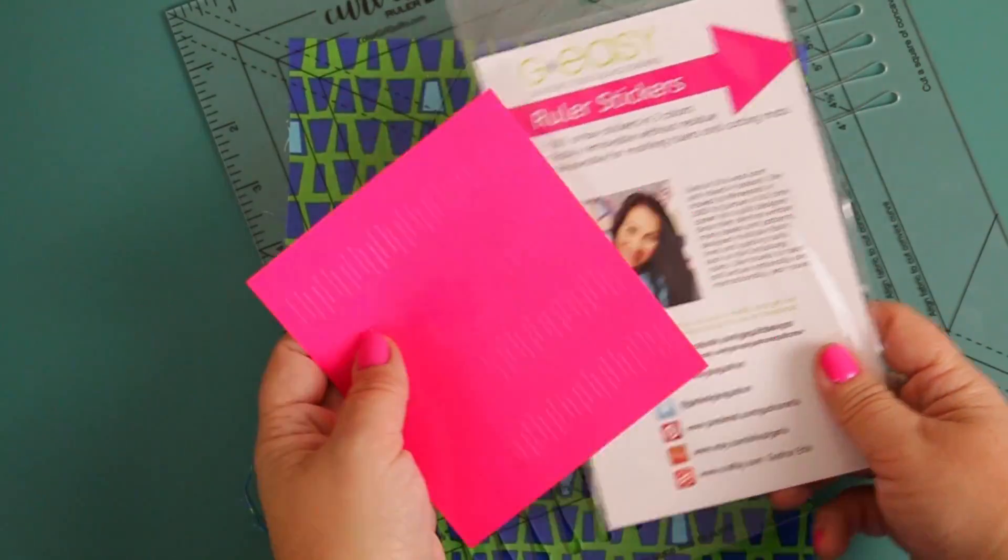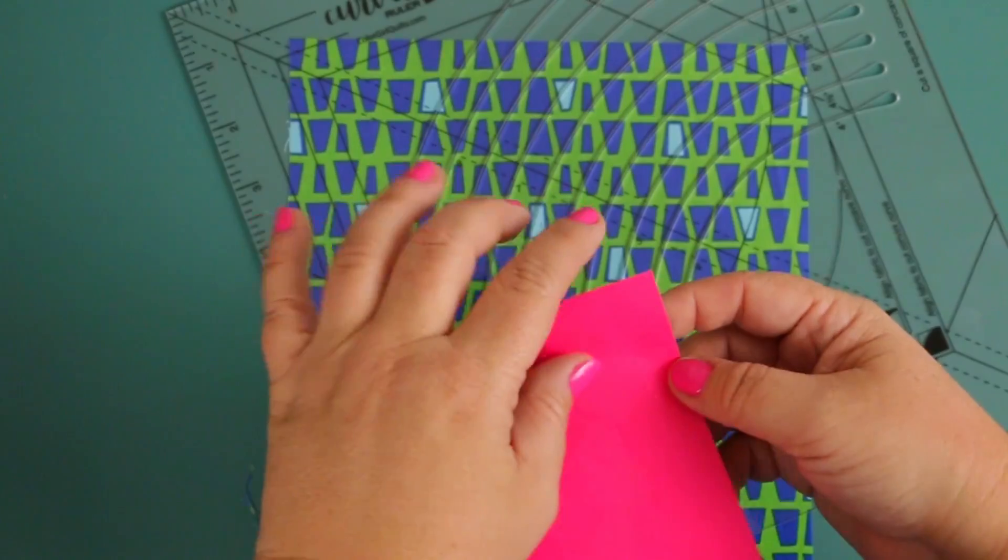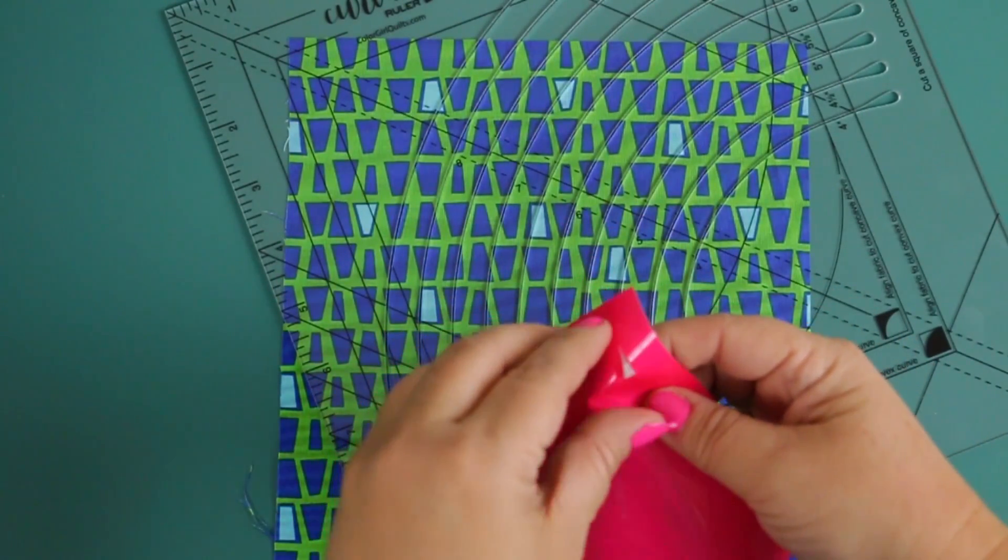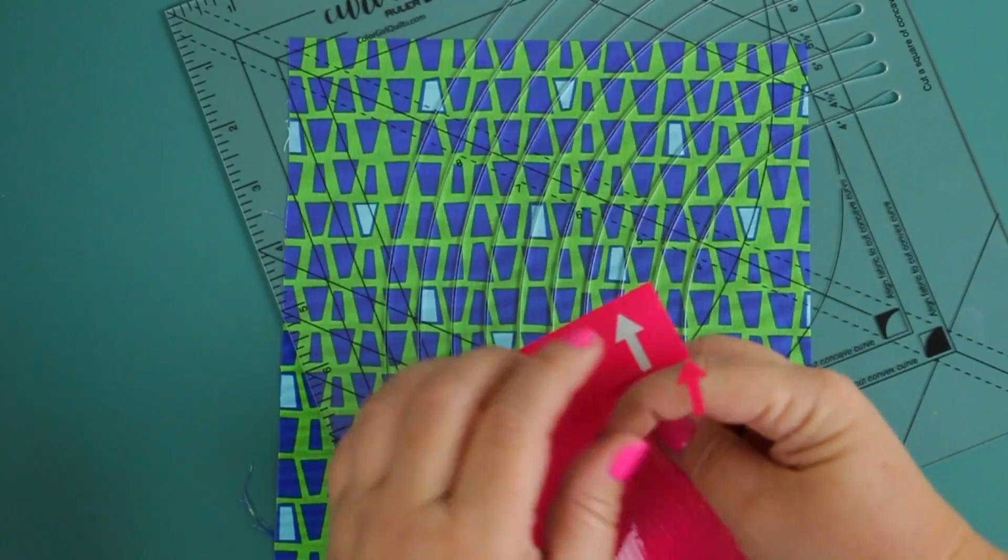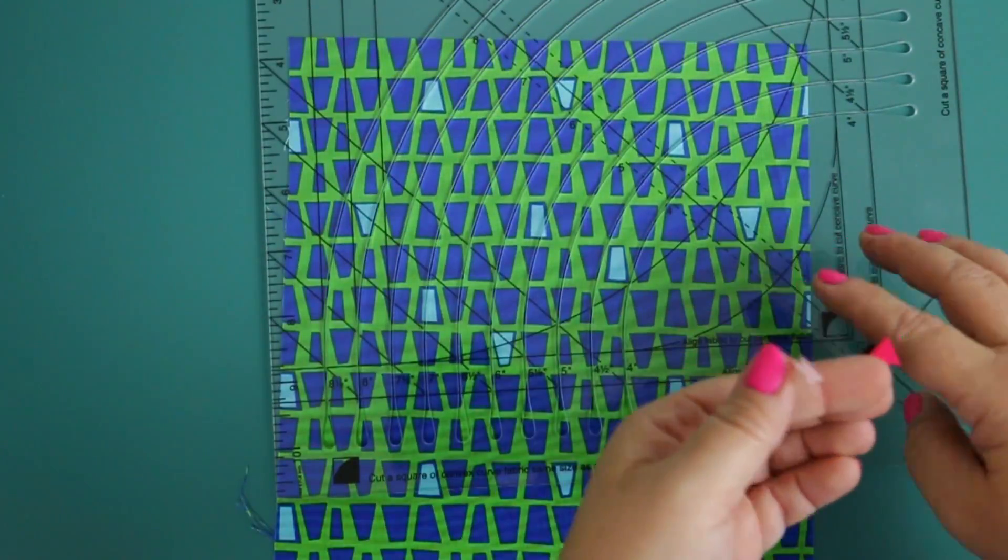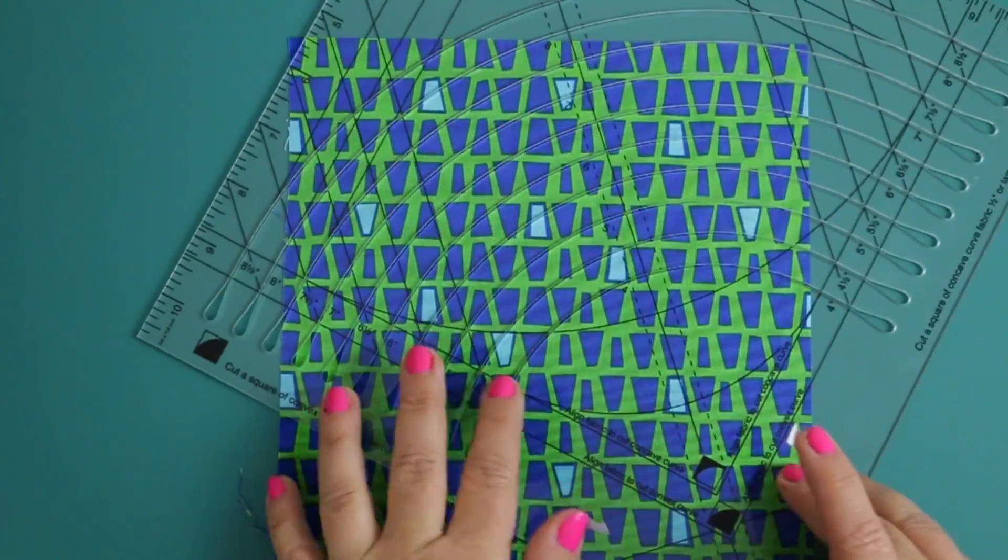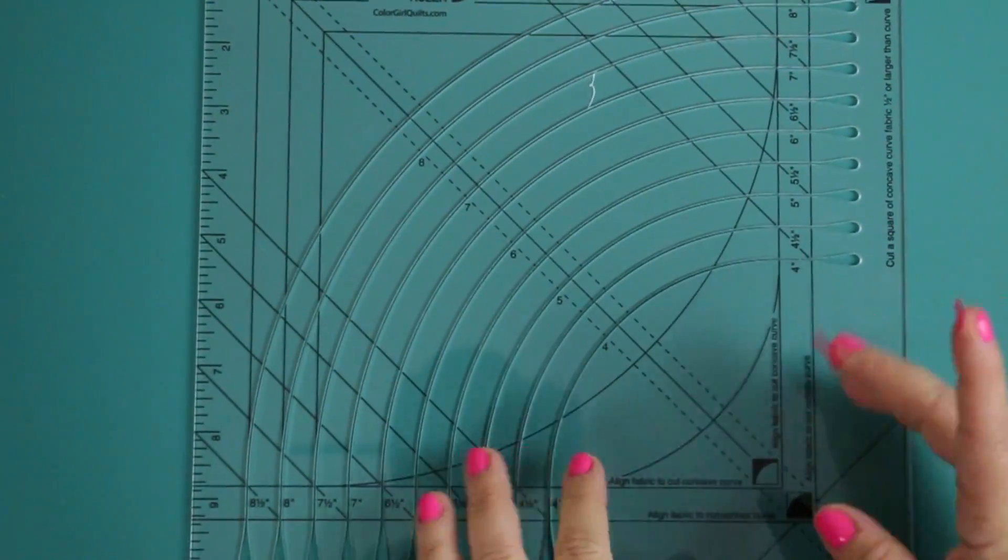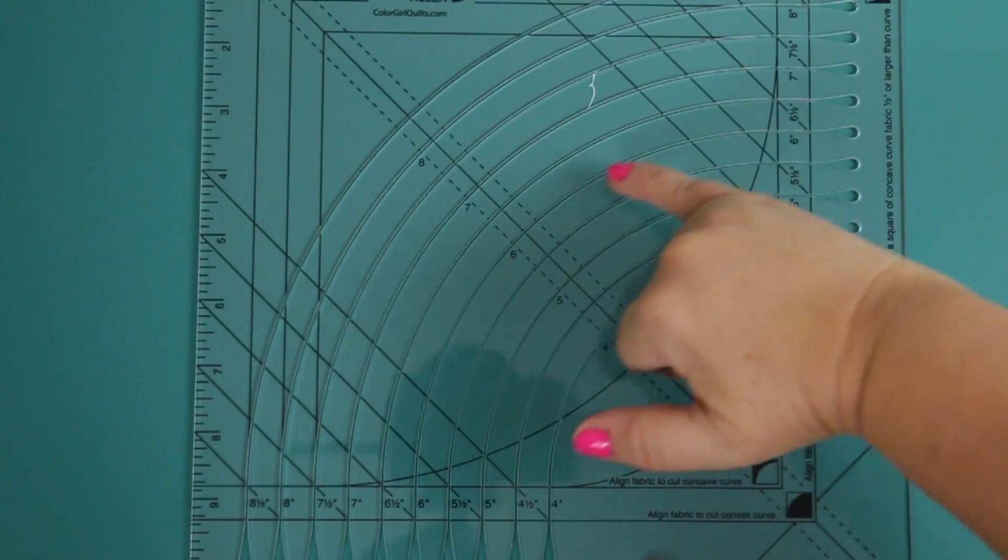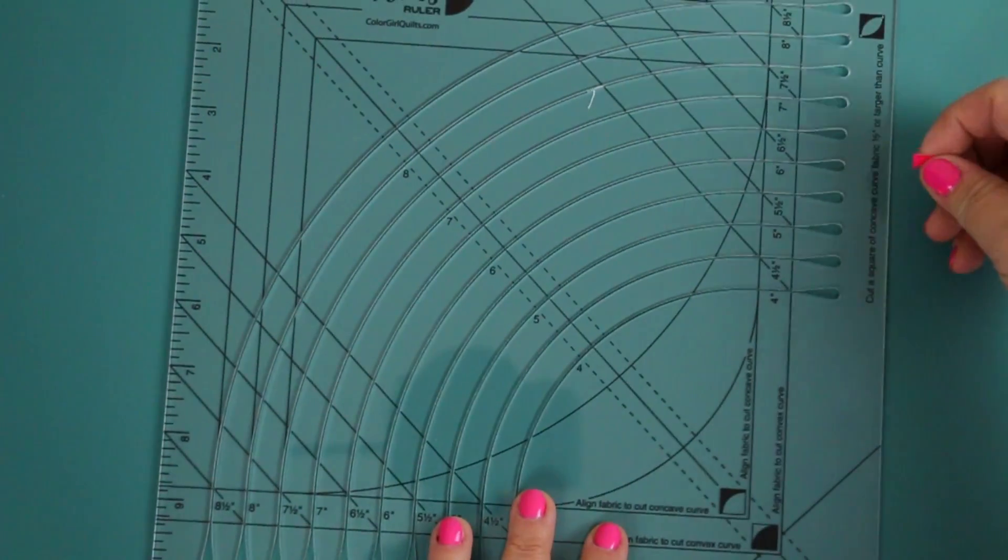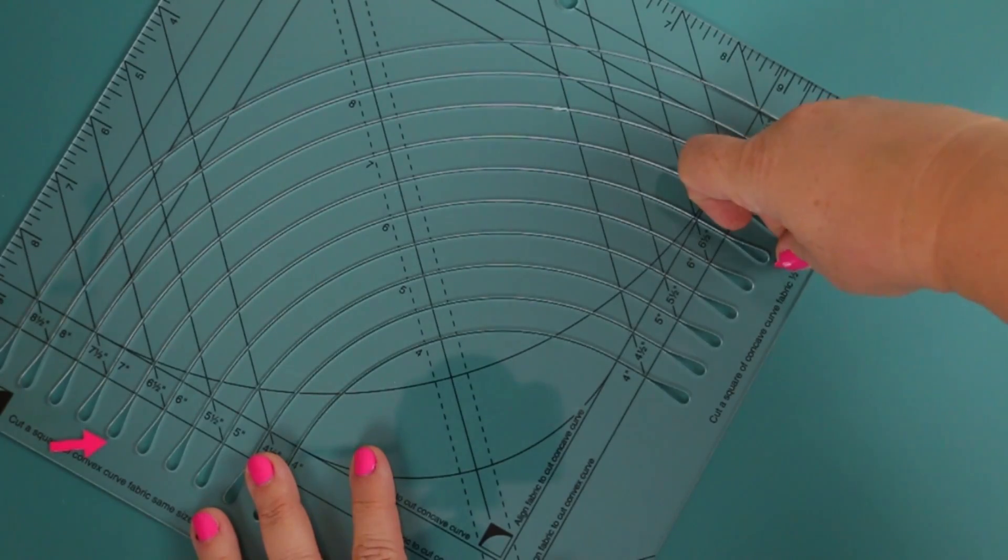And I love when all my notions work together. These are the G-Eazy stickers. And you can click the description link below to where it talks about how to use them. But basically, they're stickers that are looking like arrows. And you're going to just put those arrows at the end of the curve that you want to cut. So in this case, we're cutting the six and a half inch. Now, this really comes in handy when you're working with a print like the one I was just using. It just makes it a little easier. You're not getting confused. So put the stickers where you want and now you won't have any confusion.